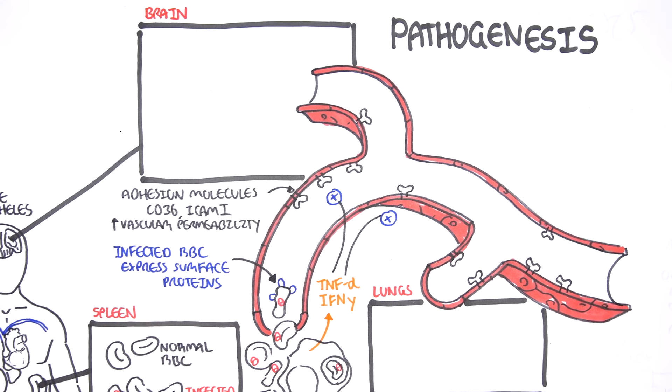The cytokines released by monocytes and macrophages also increase vascular permeability in organs. Depending on the location of the organ, the adhesion molecules expressed by the endothelial cells are different. So for example, in the brain, it is CD36 and ICAM-1 that are expressed on endothelial cells.